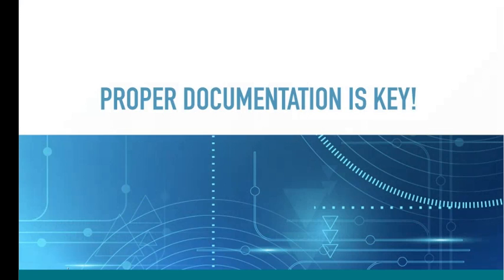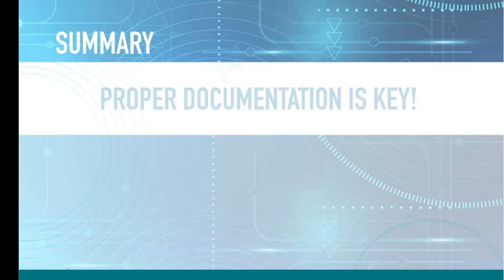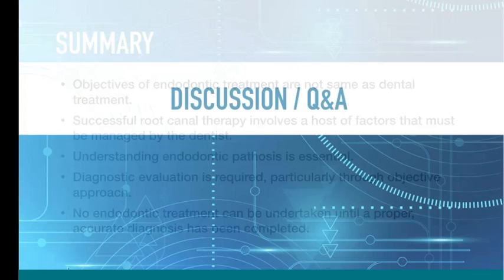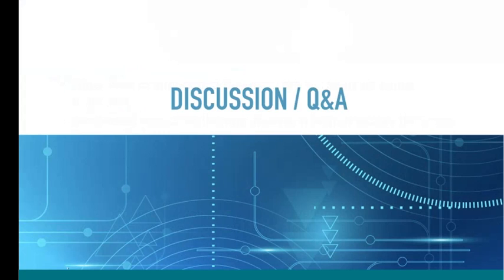Proper documentation is key. Write everything down so if the patient comes back, you know exactly what happened. In summary, hopefully we've satisfied the objectives of endodontic treatment — to prevent or eliminate apical periodontitis and retain the patient's tooth hopefully for a lifetime. Making a proper diagnosis and understanding pathosis is important. Do not treat until you've made an accurate diagnosis. At this point, let me hand things back to Rich for some Q&A and any questions you may have.